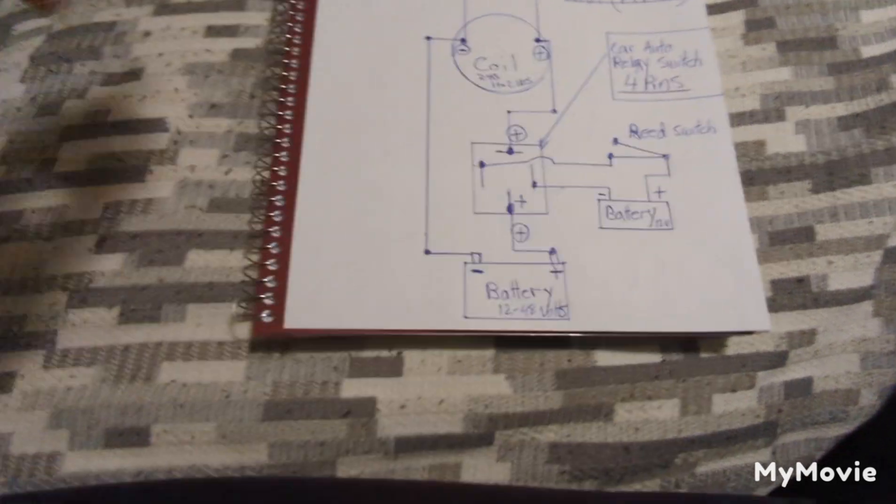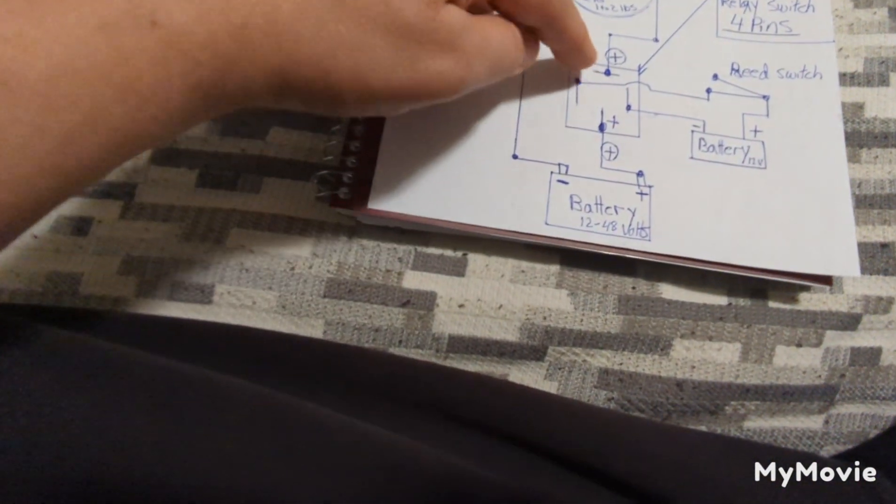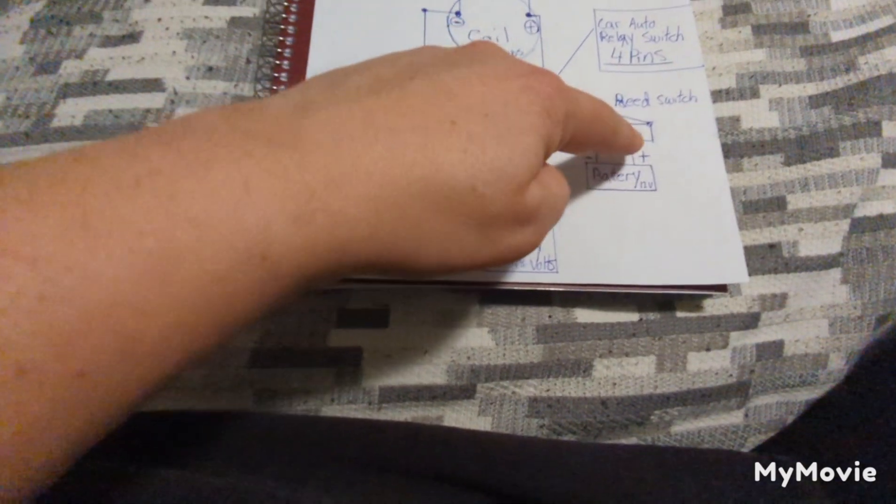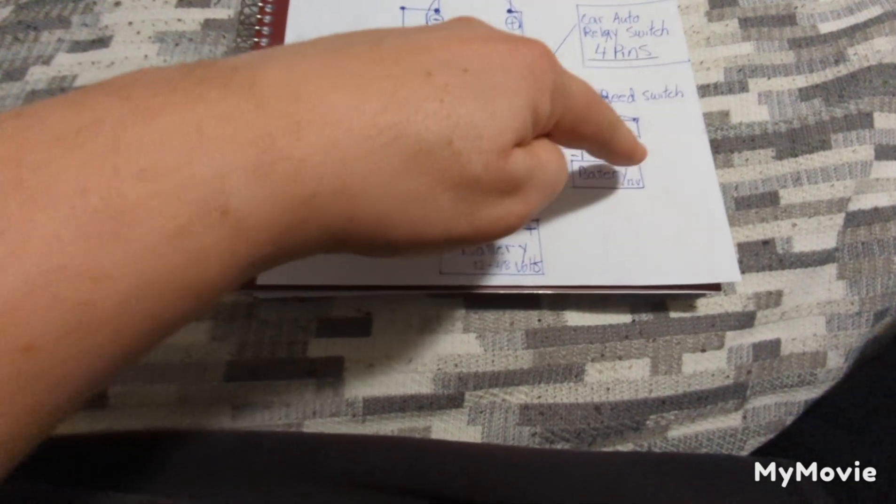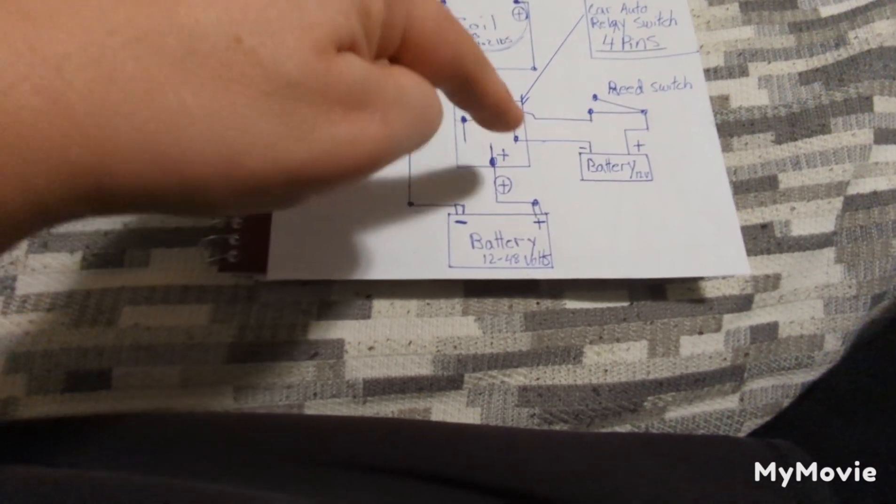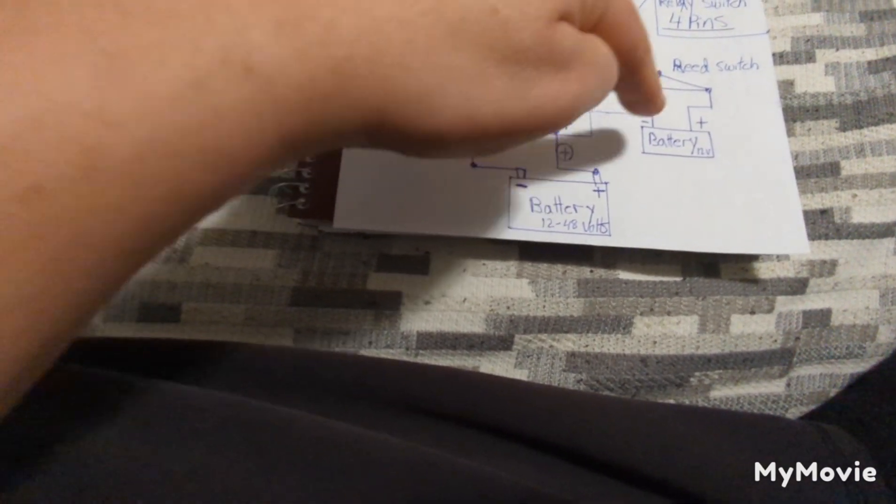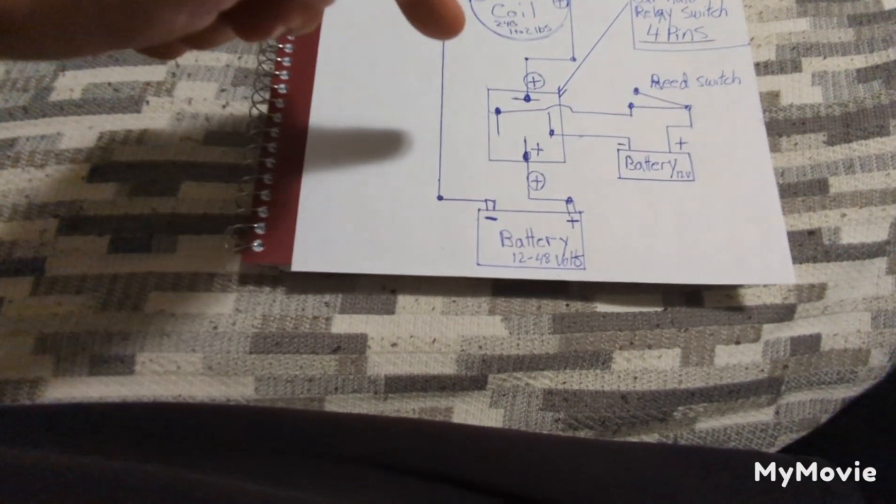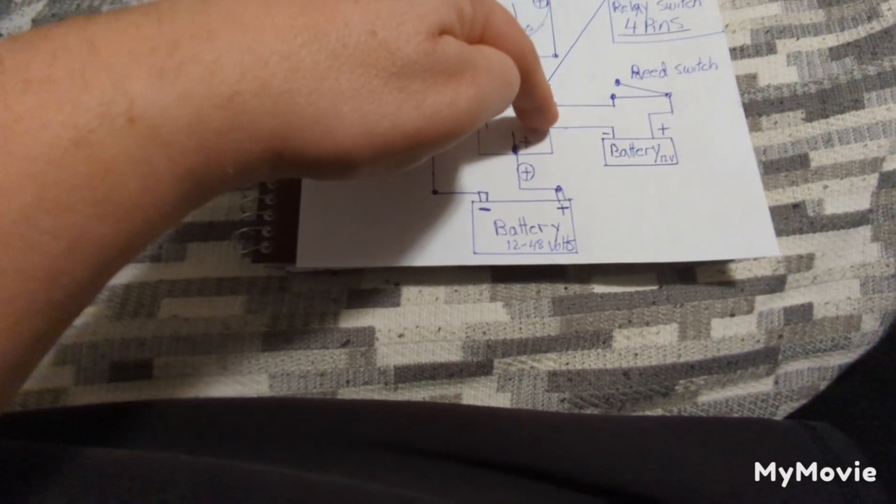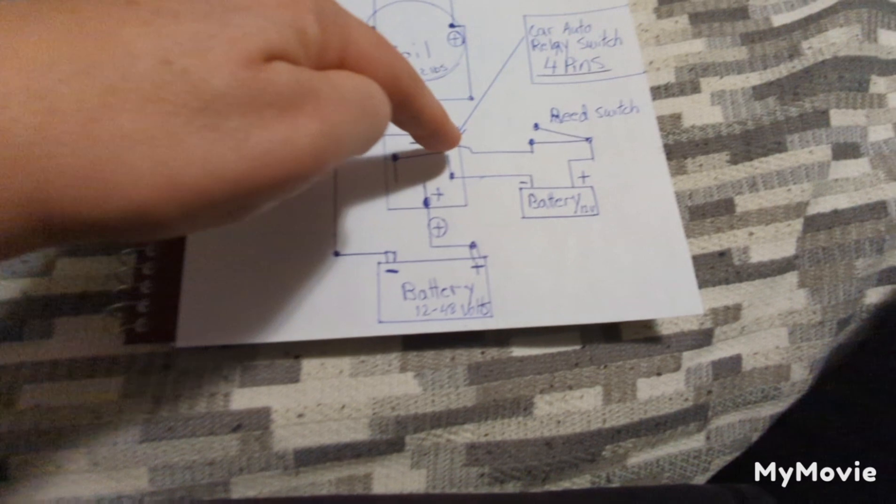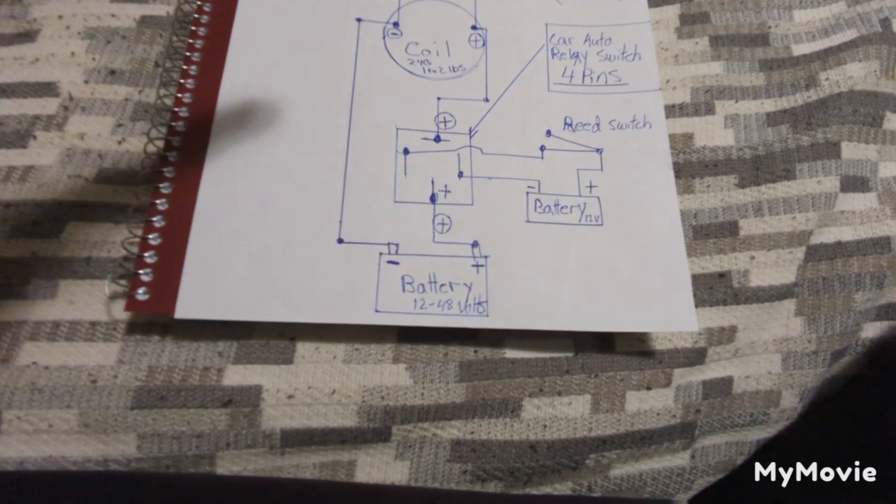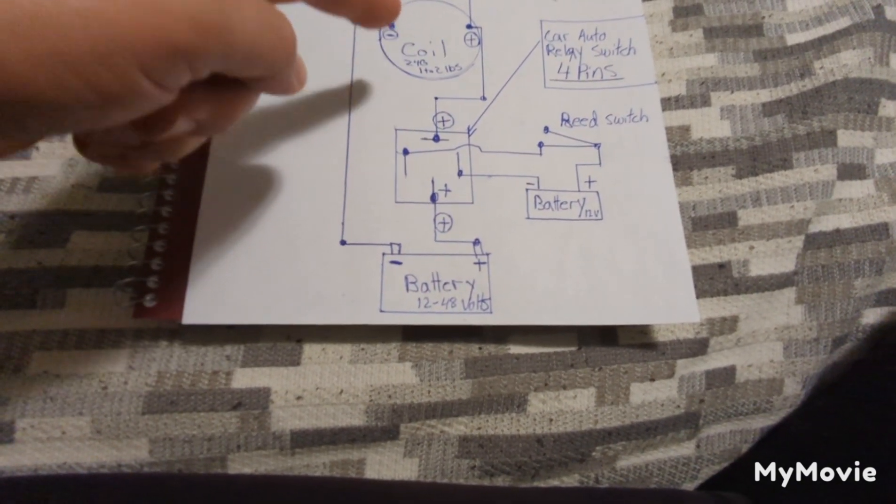From there it goes into the spark gap switch. Pin one and pin three controls your reed switch. That would be a series circuit. You would have to have a separate battery to run that. If you put too much power into your reed switch you could blow your reed switch. Pin one and pin three is for the reed switch. Just follow the diagram as it is. I got it posted on Patreon so you can see that.